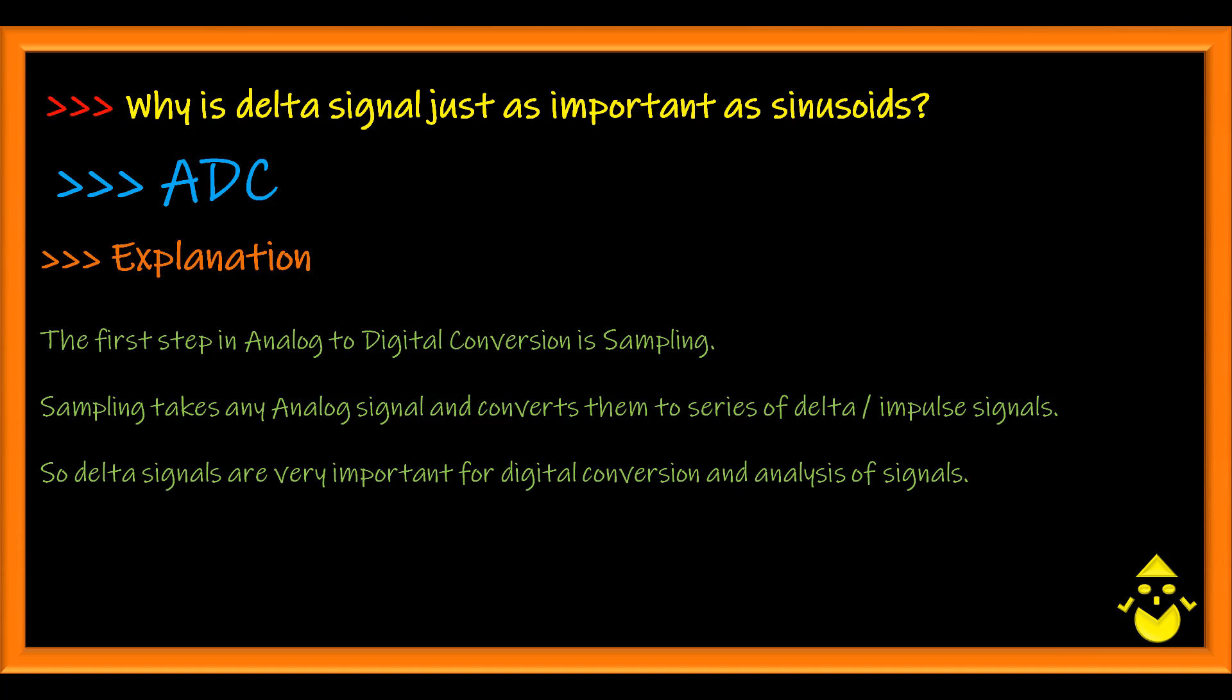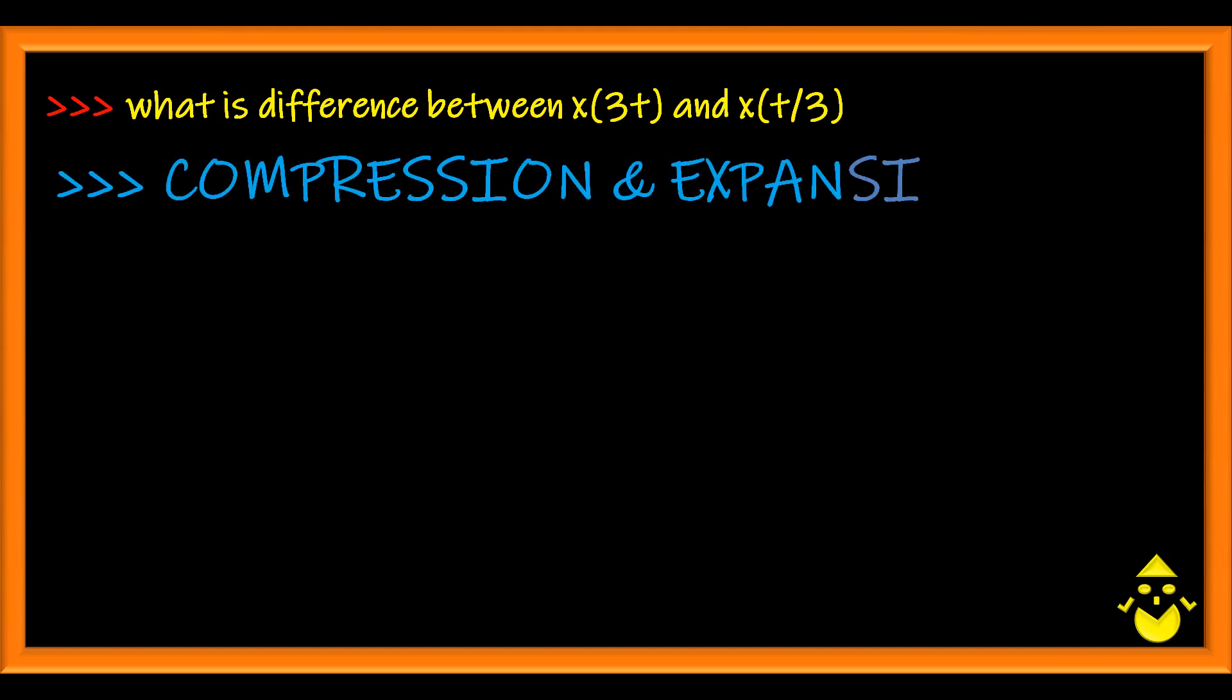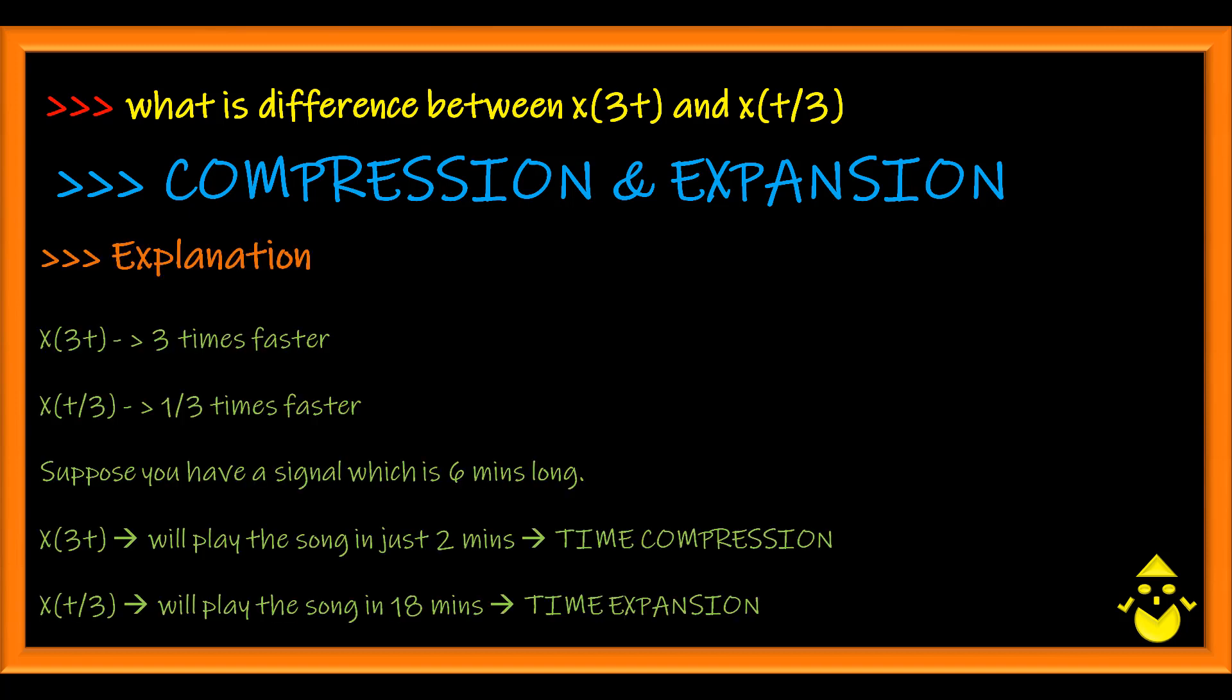What is the difference between X of 3t and X of t by 3? It's again a very confusing question not to be mistaken. X of 3t is your compression and X of t by 3 is your expansion. Just remember X of 3t makes your signal three times faster, whereas X of t by 3 makes your signal one by three times faster.